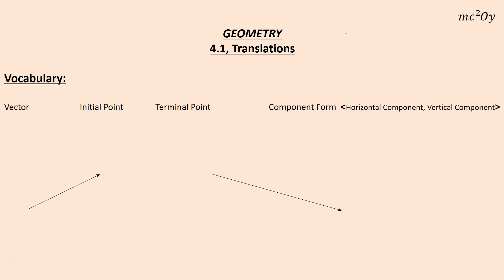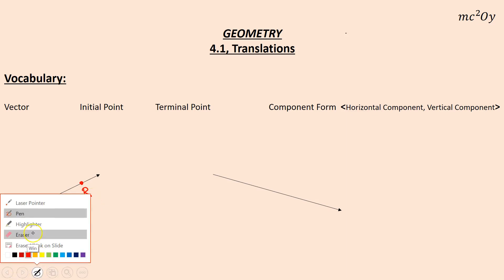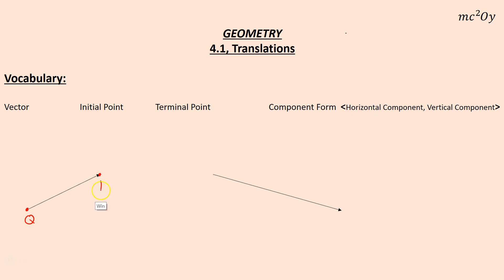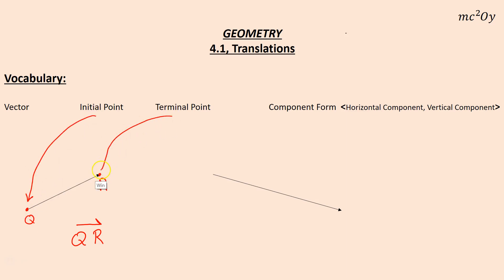First is vector. A vector is a quantity that has both direction and magnitude. A vector has an initial point, or a starting point, and it has a terminal point, or an ending point. We call that vector QR, and when we label it in symbolic form, we put a line with a half arrow on top — just the top part, as if you're drawing a ray. That says vector QR.